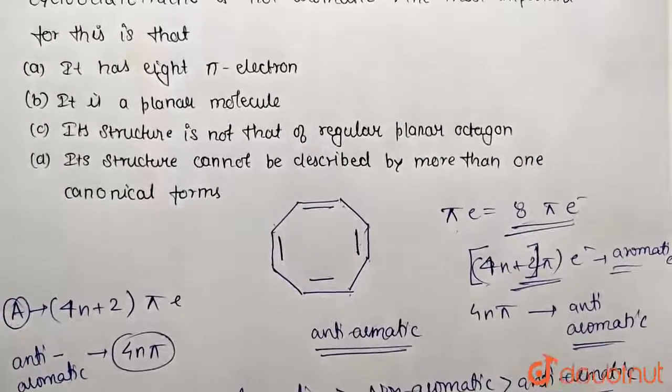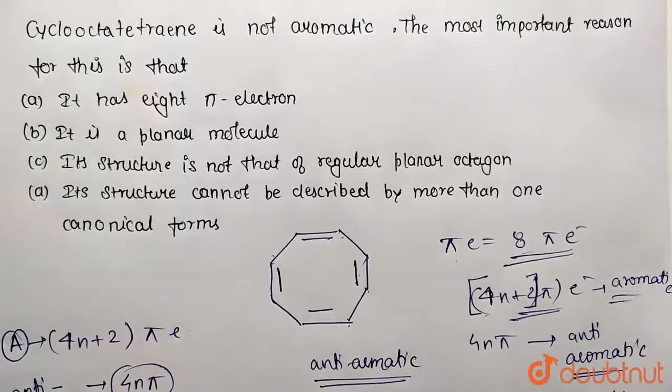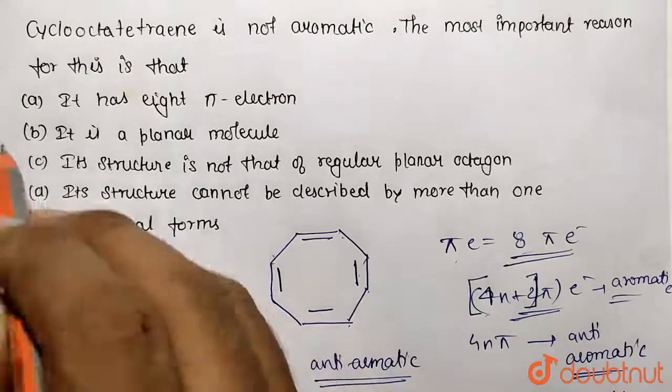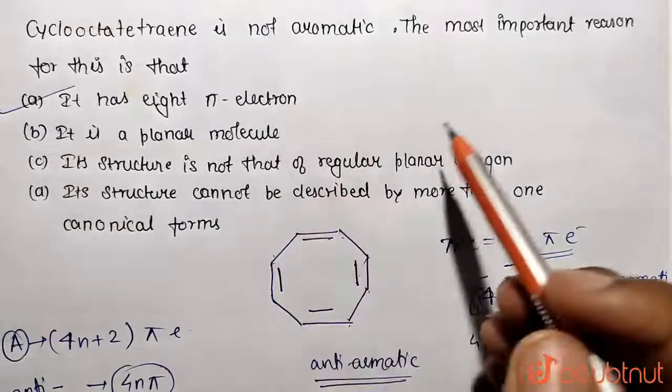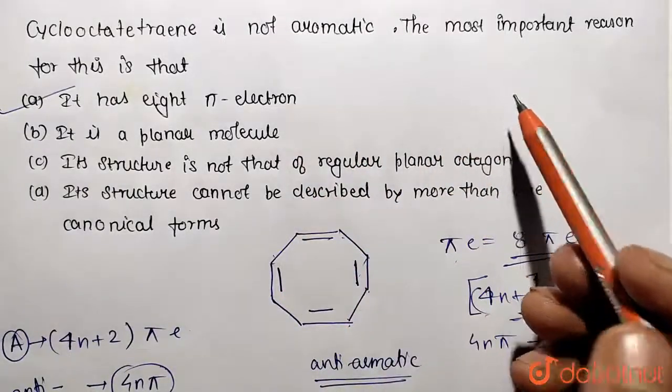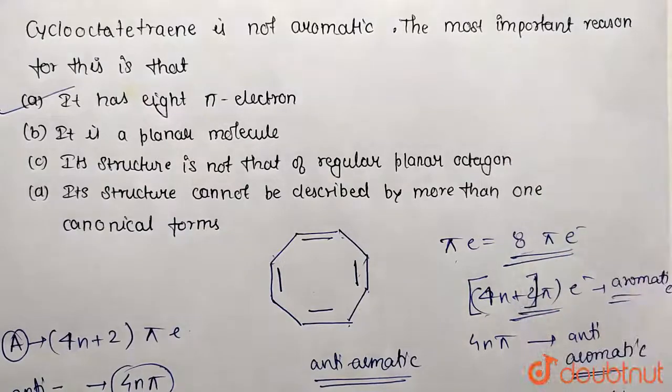So this was the solution. What is the basic fundamental reason why it is not aromatic? Obviously it is containing 8 electrons, that is making it anti-aromatic first, and it is changing its shape to form non-aromatic. So this was the solution, thank you.